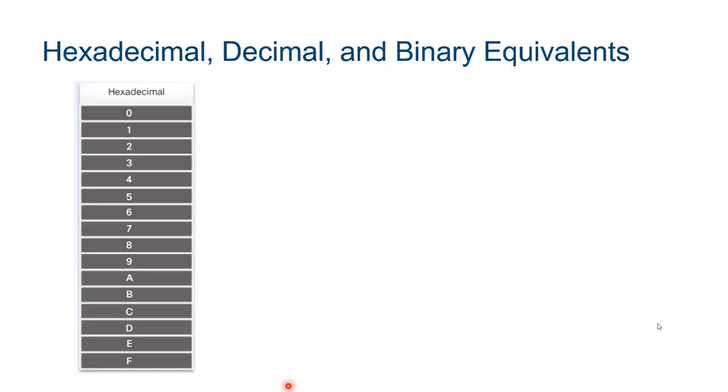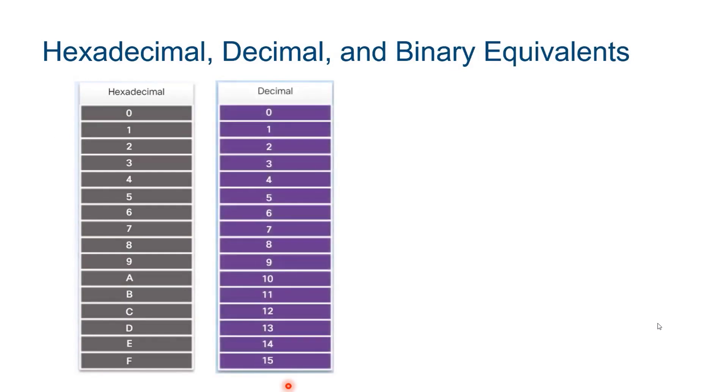Let's look at the decimal and binary equivalents of each hex symbol. These are the decimal equivalents. Note that the hex symbol A is equal to decimal 10, hex B is equal to decimal 11, and so on until we get to hex F, which is equal to decimal 15.